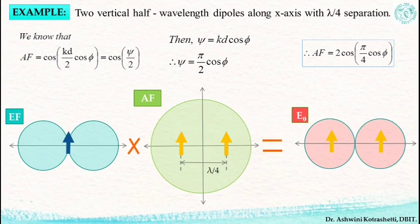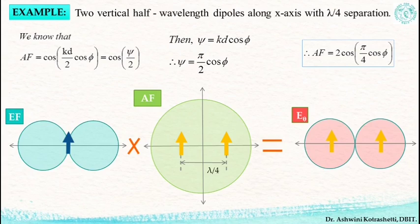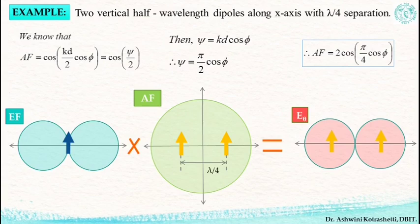What are the limitations of pattern multiplication? The major drawback of this method is the fact that this technique inherently neglects the inter-element coupling, which means the mutual coupling between the elements is not taken into account. If the spacing between two adjacent elements is high enough, the inter-element coupling can be neglected. If on the other hand the spacing is below a certain limit, the inter-element coupling increases and will influence the overall directivity of the antenna array. This is the major disadvantage of pattern multiplication which has to be borne in mind.